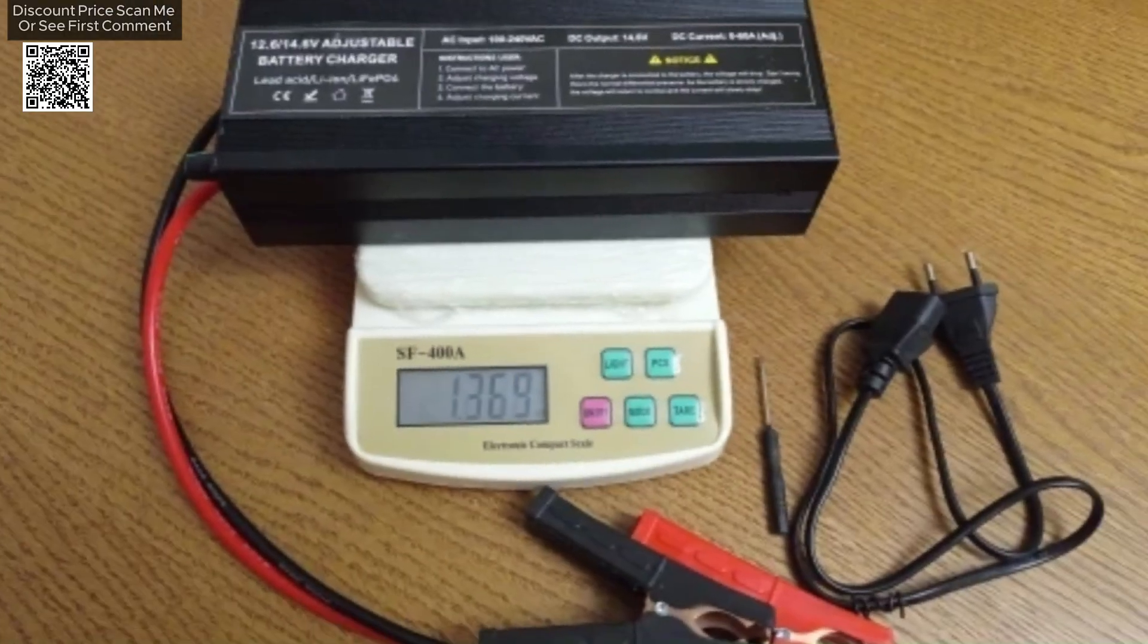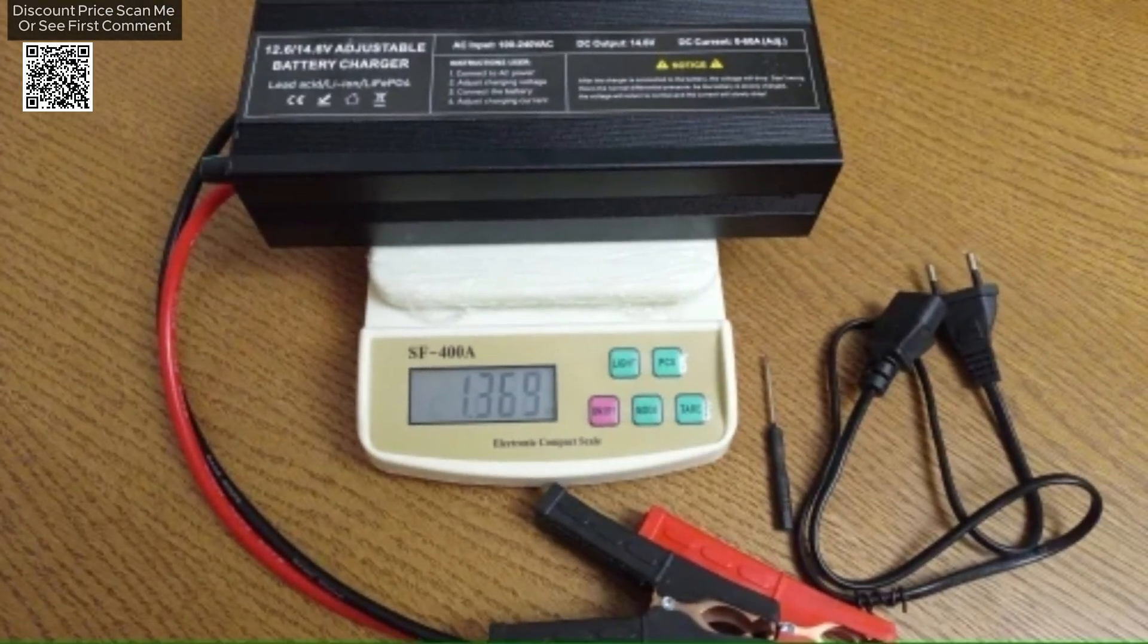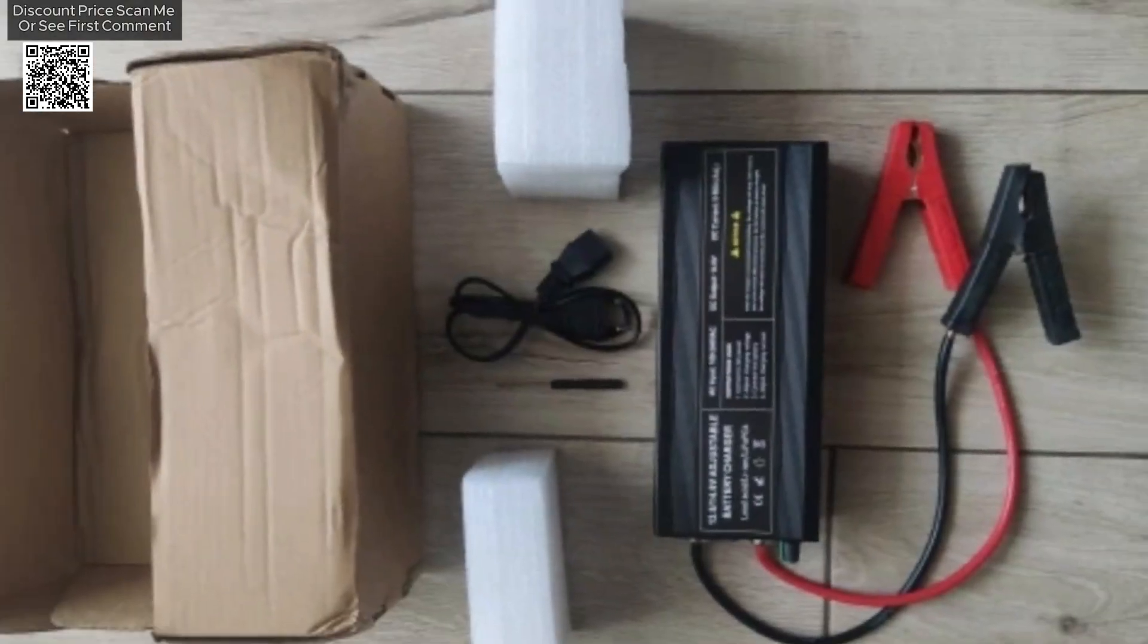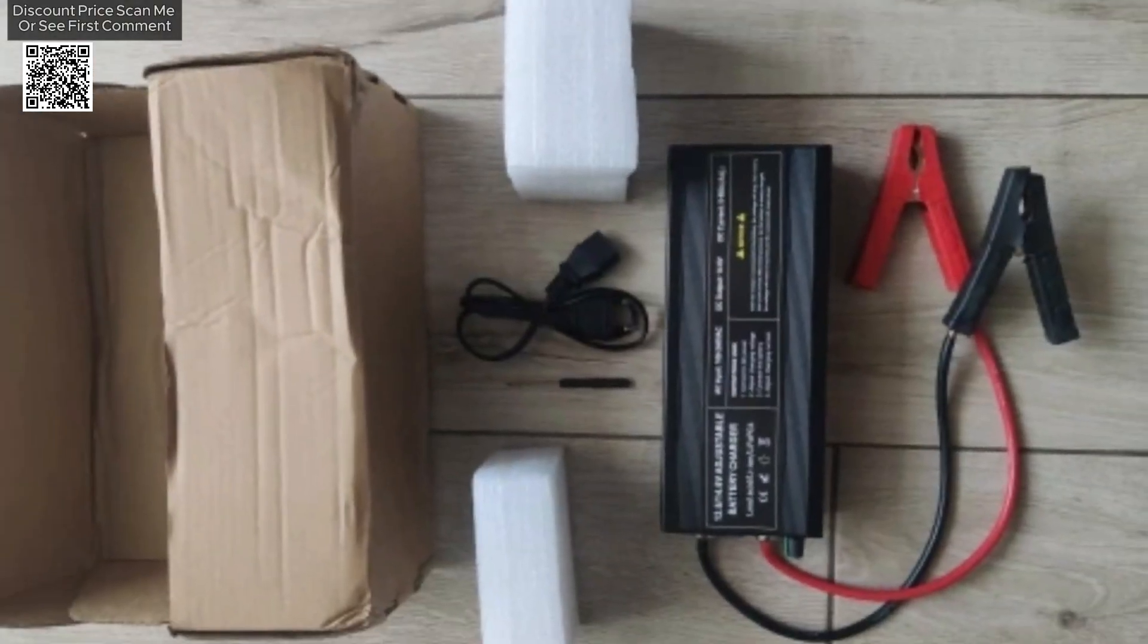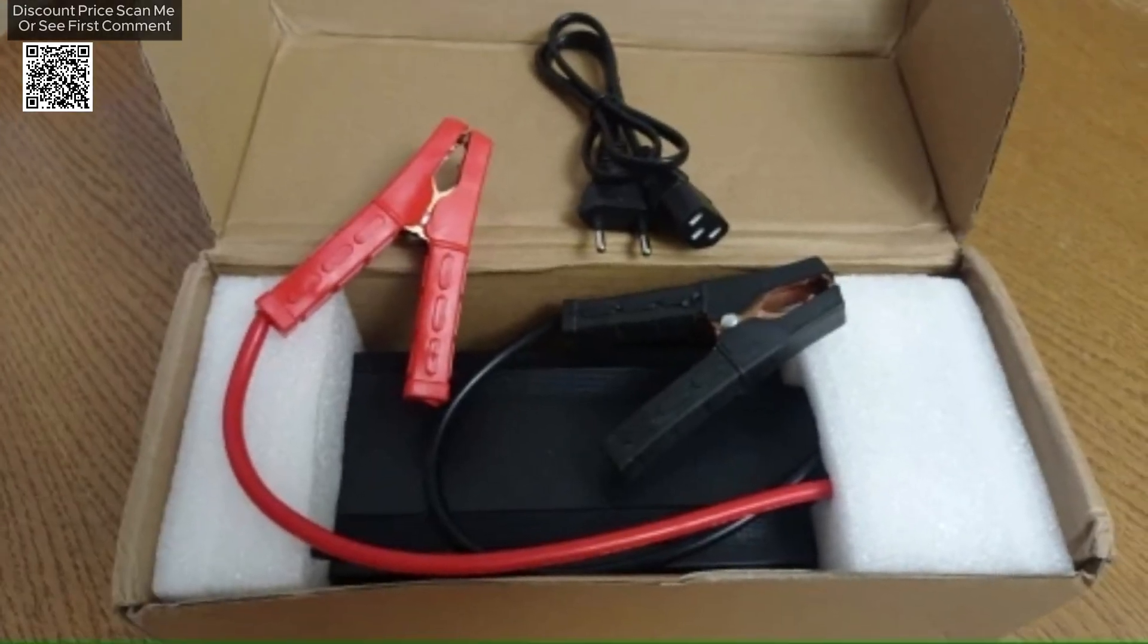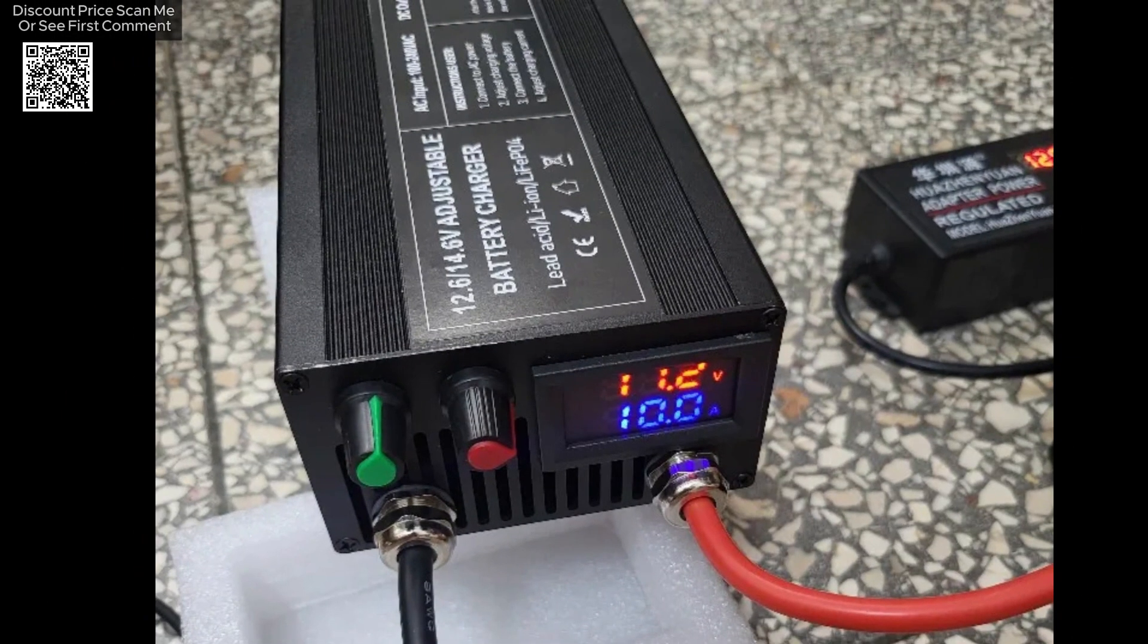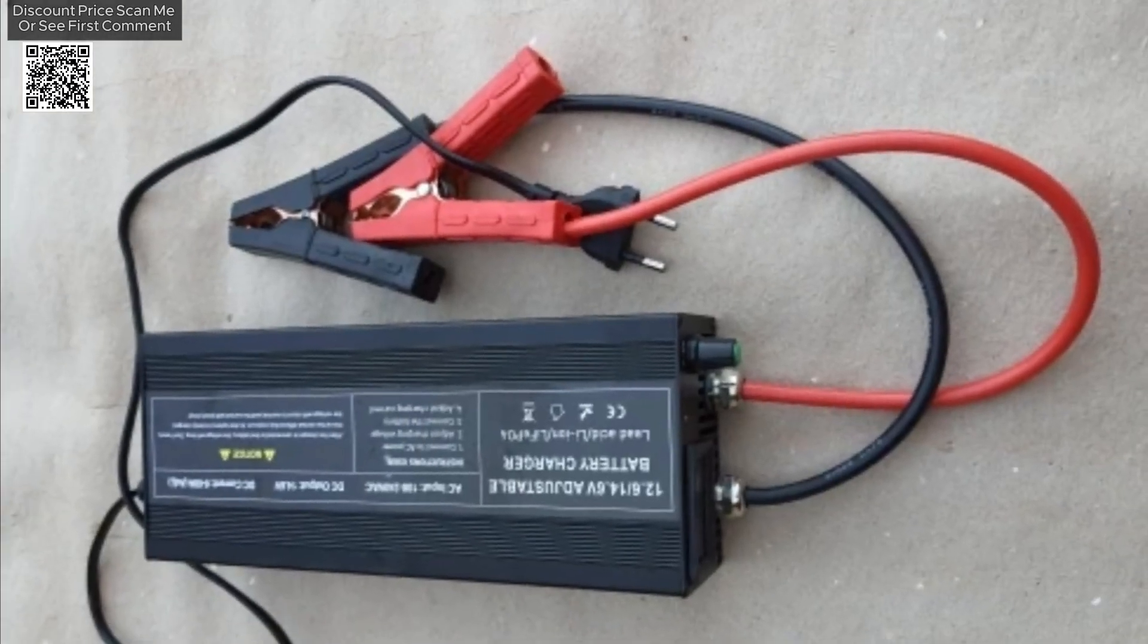The charger offers adjustable voltage and current, with a voltage range from 0 to 15 volts. This flexibility allows it to meet the charging requirements of various battery types, including ternary lithium and LiFePO4 batteries. The ability to adjust voltage and current means the charger can be fine-tuned to suit the specific needs of different battery systems, providing precise control for safe and efficient charging.